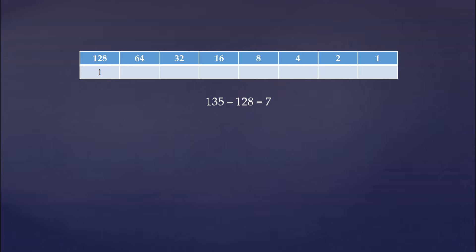We take our remainder of 7 and check it against the next place value, which is 64. Since 64 is larger than 7, we put a 0 in that place. We go to the next place and check 7 against 32 — again, 32 is larger than 7, so we put a 0 there. 16 is larger than 7 and 8 is larger than 7, so we put zeros in those places as well.